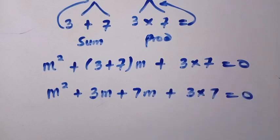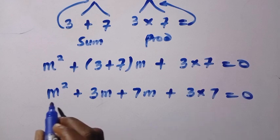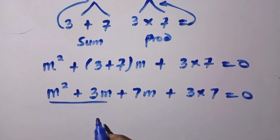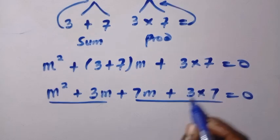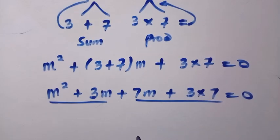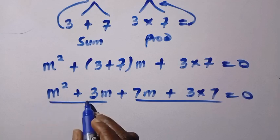We have 4 things here. We have m raised to the power 2 plus 3m, and we have 7m plus 3 times 7. Note that 3 times 7, here they are together. We are going to factor out what is common.